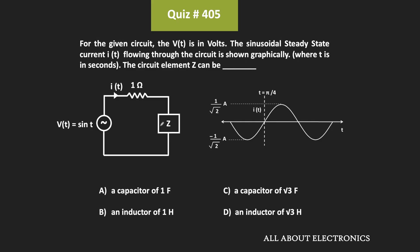Hey friends, welcome to the YouTube channel All About Electronics. So in this question, we have been given this circuit and we have been asked to find the element Z which is shown in the given circuit. So here this Vt is the applied voltage and based on this voltage, this sinusoidal steady state current It is flowing through this circuit, and here we have also been shown this current graphically. So based on this, we have been asked to find this element Z.